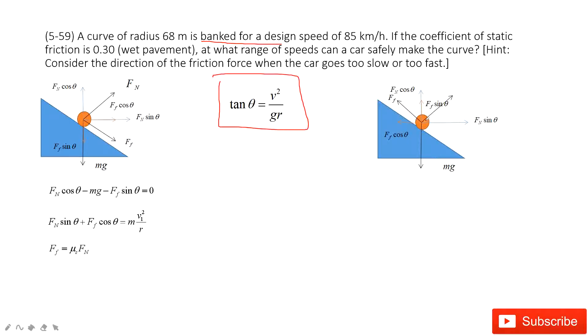And then the second situation is the car has a tendency to move down so the friction is up. In this one, we can project the friction in two components, friction sine theta and friction cosine theta.